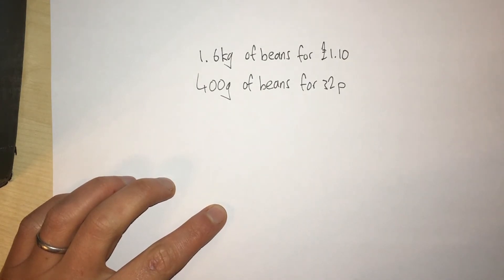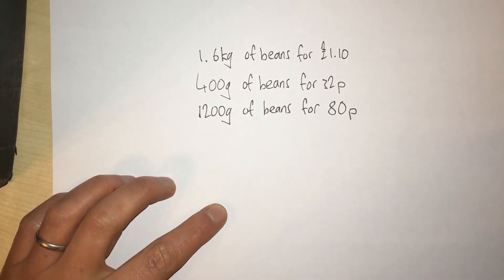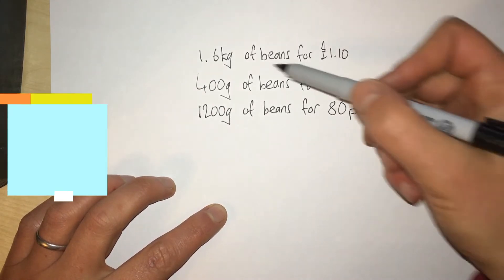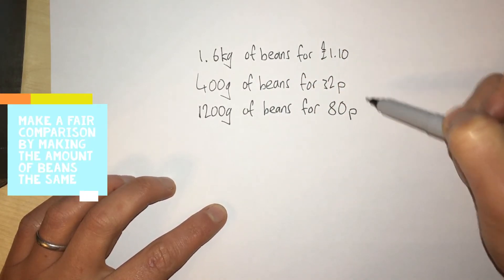If this is the question and we're asked which deal is the best value for money, how would we do it? We have to try and make the amounts the same and then compare how much each one is.